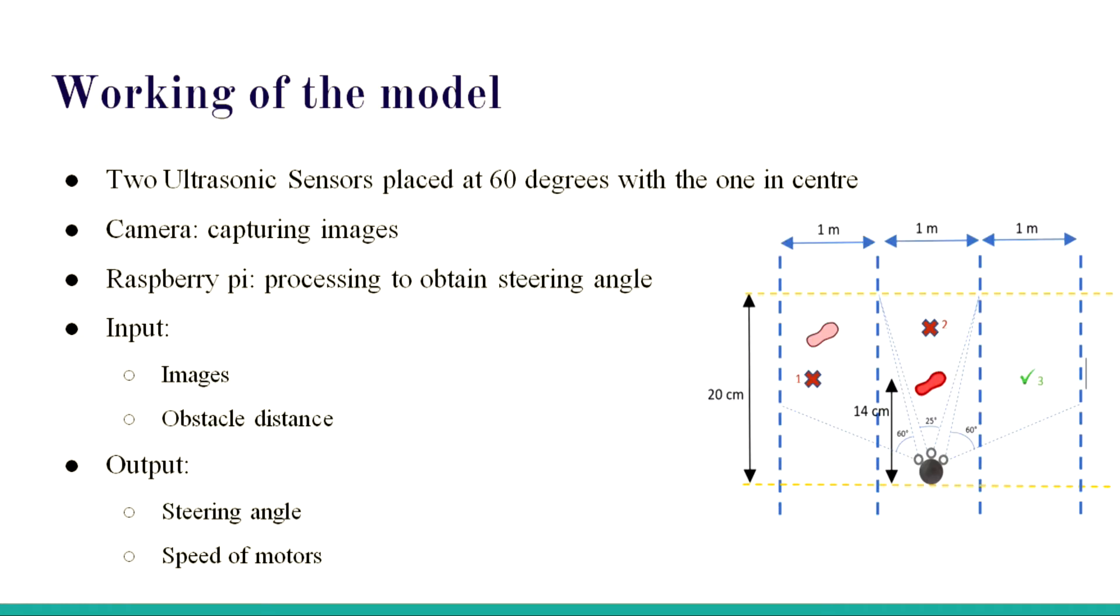The model works as follows. Two ultrasonic sensors are placed at a 60 degree angle from the centre. There are three ultrasonic sensors with one at the centre. The centre one gets the distance from the object in front - it might be a car, a person or any object. Once the distance detected is less than a particular decided value, it checks for the neighbouring lane. If the right side lane gap is more than the left side, then the model trains the car to move to the right direction.